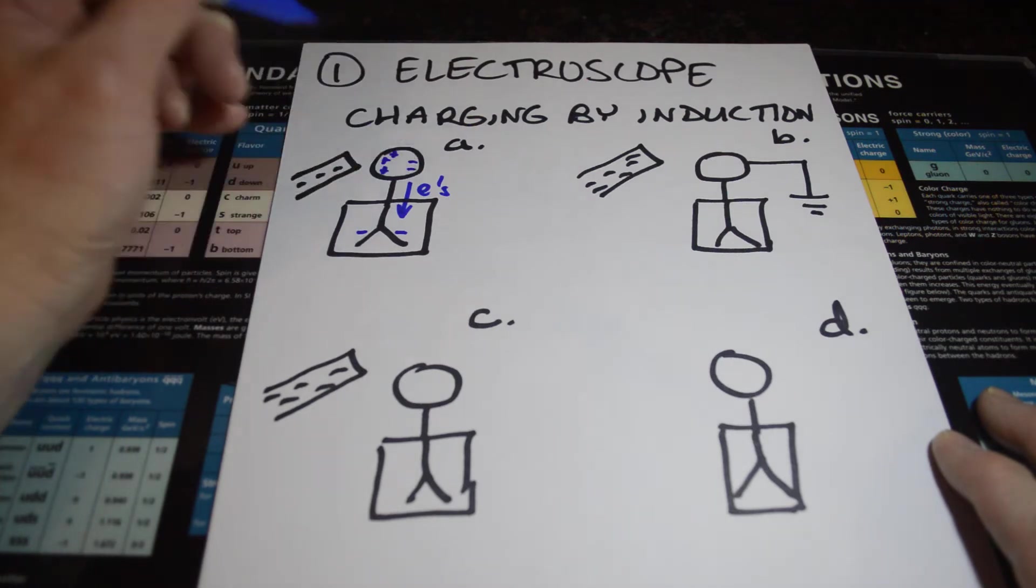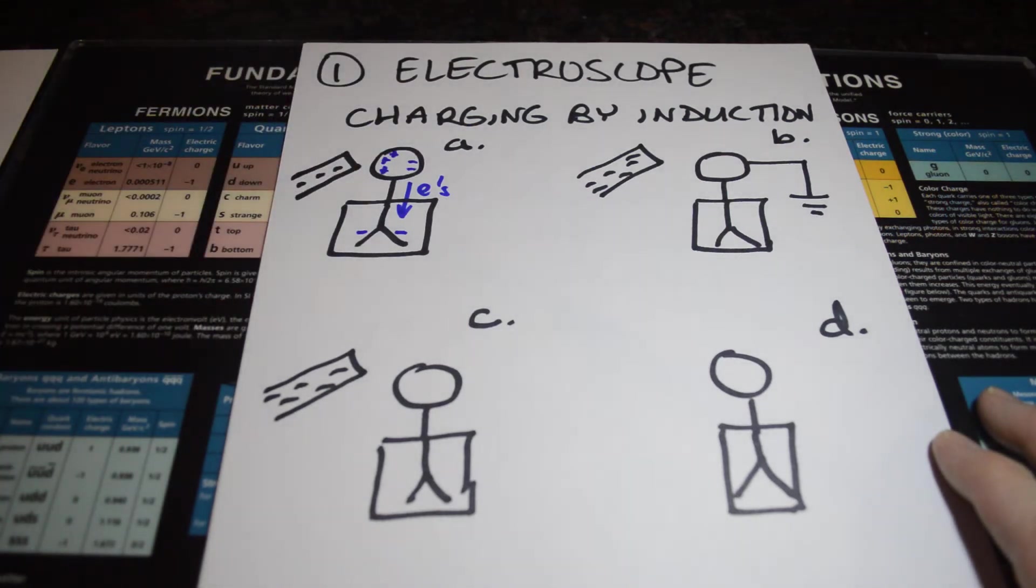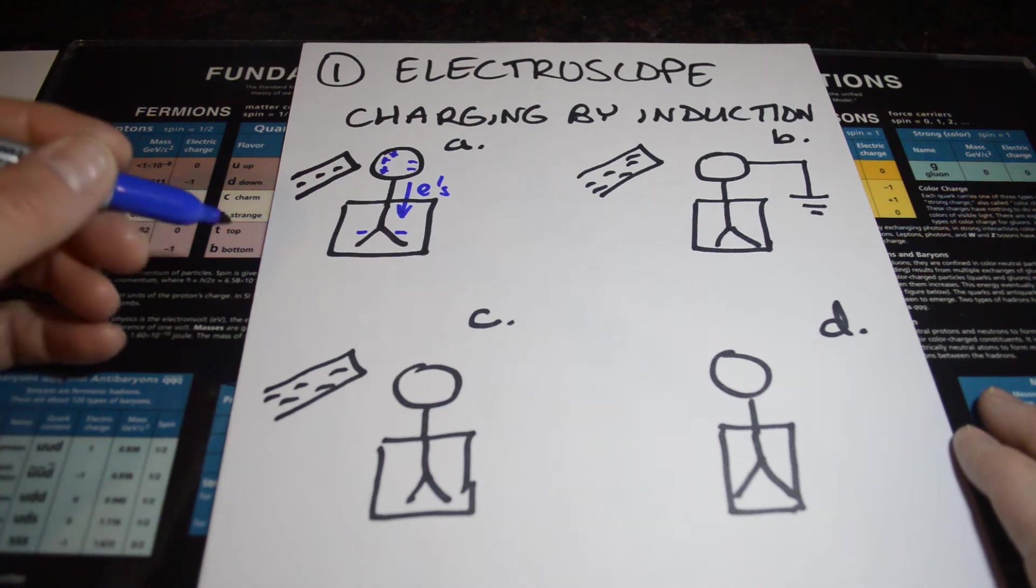More negatives on the right, more positives on the left. But some of the charges are going to repel down to the bottom of the electroscope. So that's charge polarization.